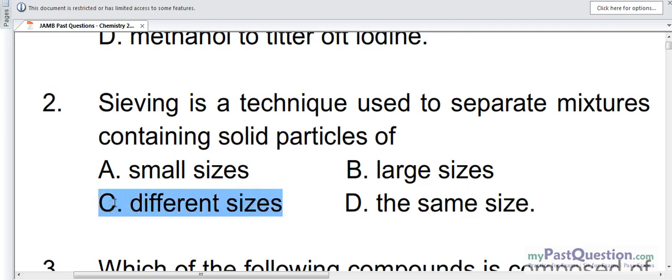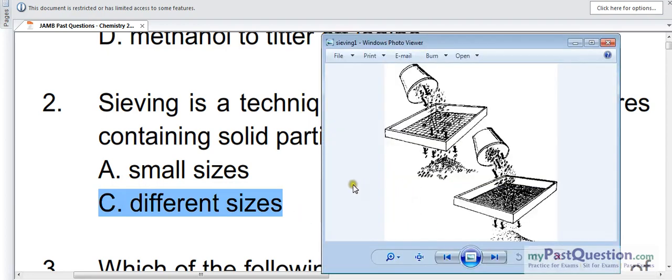Sieving is all about separating particles, solid particles of different sizes. Just look at this picture. See, this is the container that the particles was into. And this is a sifter.